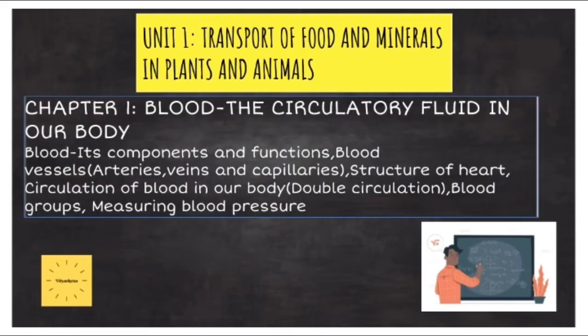The first unit is called Transport of Food and Minerals in Plants and Animals. The first chapter under Unit 1 is called Blood, the Circulatory Fluid in Our Body. We will study about blood, its components and functions, the different types of blood vessels, the structure of heart which is the main organ for pumping blood in our body, the process of circulation of blood in our body, the different blood groups, and the methods of measuring blood pressure.